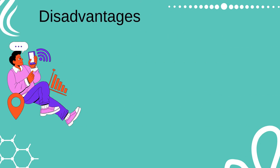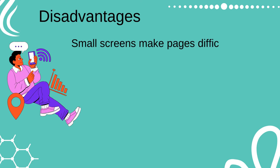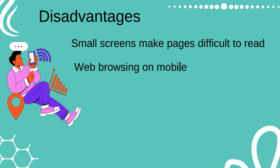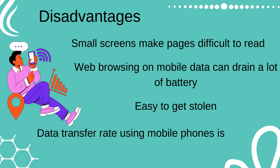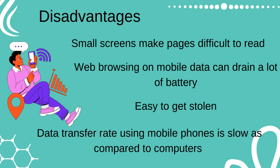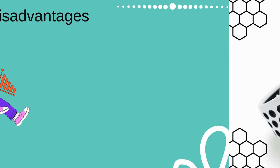Disadvantages of smartphones are: A: Small screens make pages difficult to read. B: Web browsing on mobile data can drain a lot of battery. C: Easy to get stolen. D: Data transfer rate using mobile phones is slow as compared to computers.